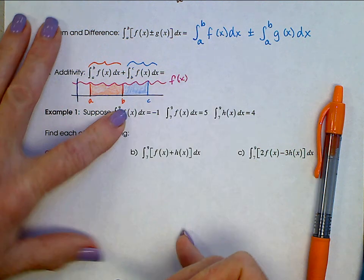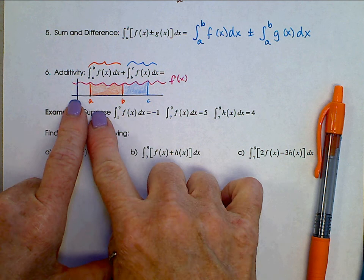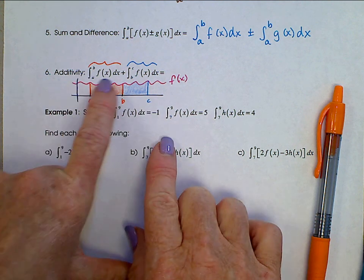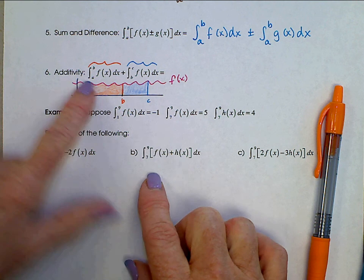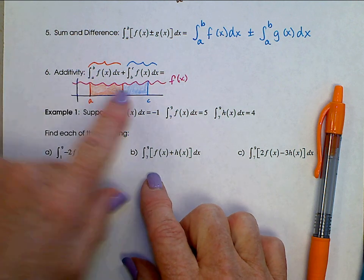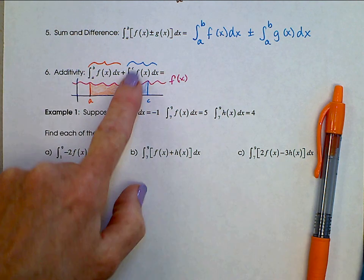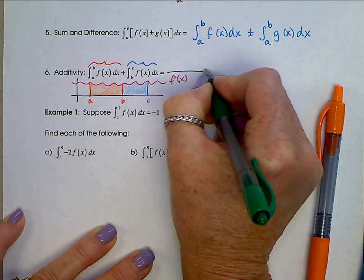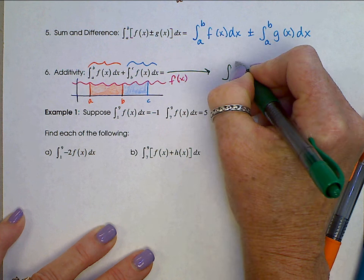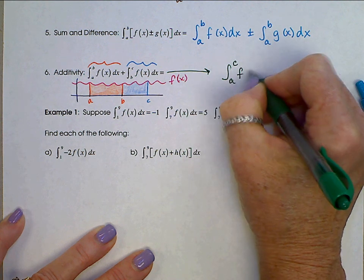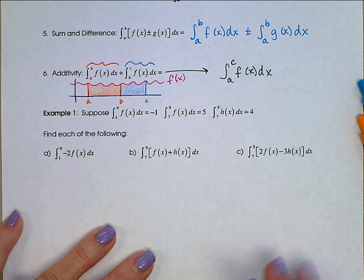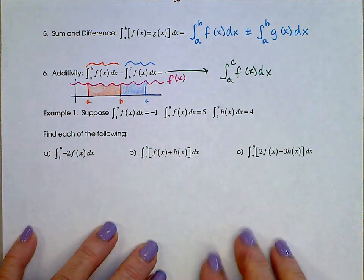When we look at the two of these added together, that is exactly the area from A to C. So this integral up here, integral of f(x) from A to B plus the integral of f(x) from B to C is the integral, I'm out of space here, let me go over here, the integral from A to C of f(x) dx.